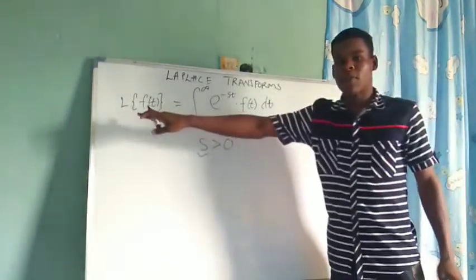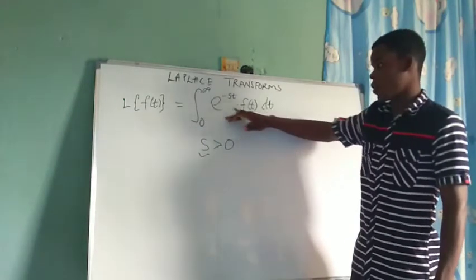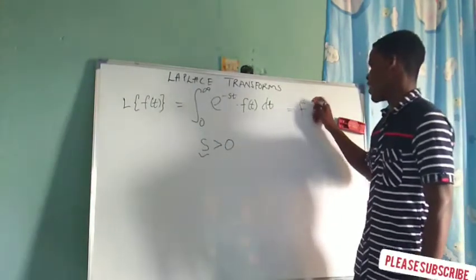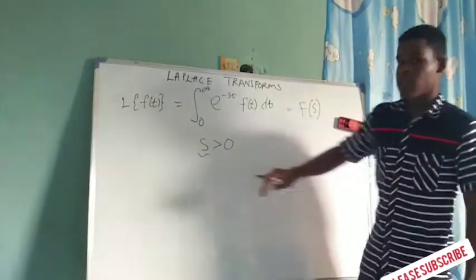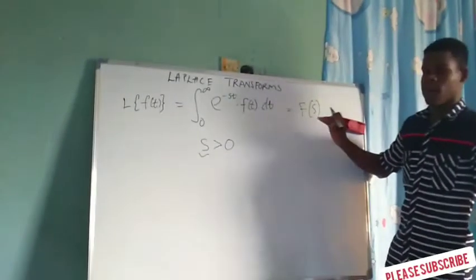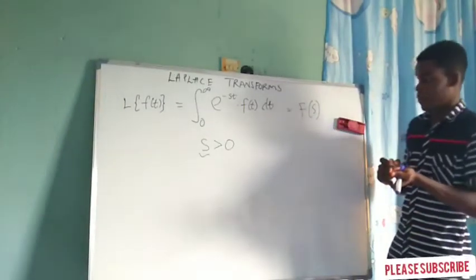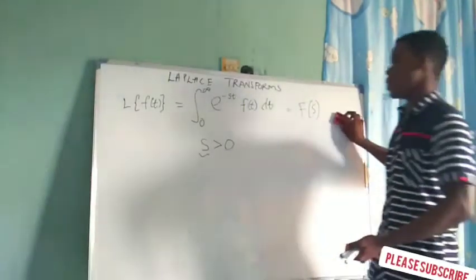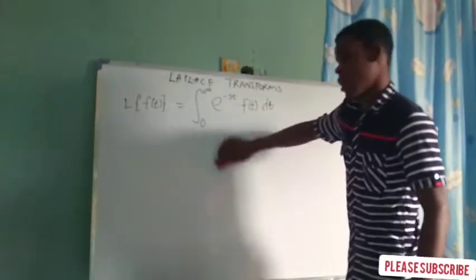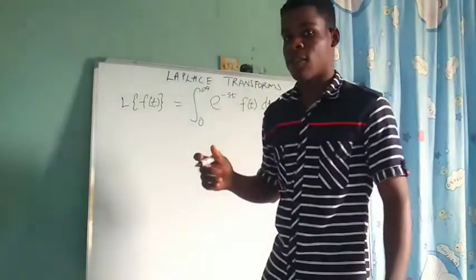After taking care of that integral sign, we're going to have a function of S. So the Laplace transform of a function of T is going to give us a function of S — this is very general. Now let's go for some practical examples. Let's take a particular example where the function of T is a constant function.